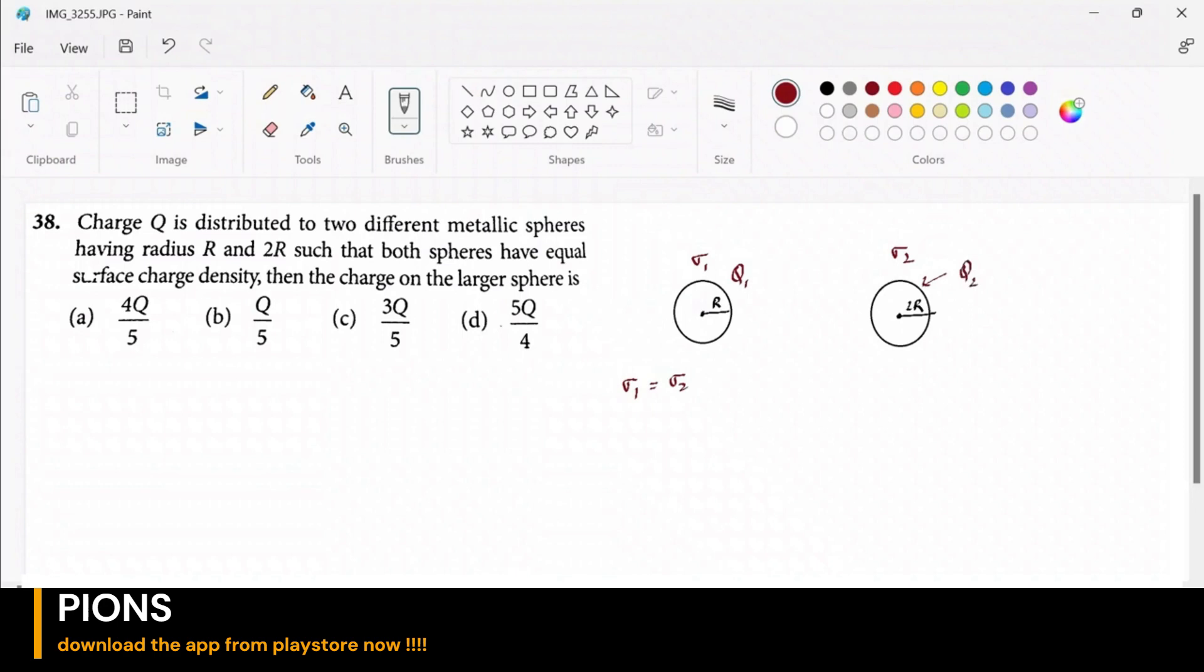So what will be your sigma 1? Sigma 1 will be charge upon area because their sphere, so it will be q1 upon 4 pi r square. The second one will be q2, that will be upon 4 pi into 2r square.